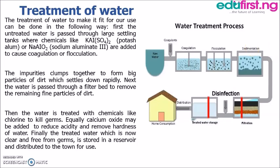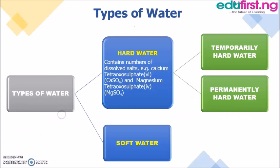In the next treatment tank, chemicals like chlorine are added to kill germs. Calcium oxide is also added to reduce acidity and remove the hardness of water before it can be used in our various homes or anywhere needed.